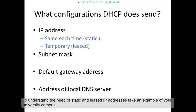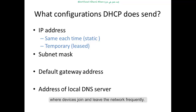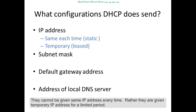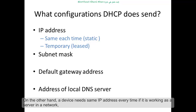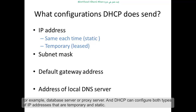IP addresses can be the same each time — that is static — or temporary, that is a lease. To understand the need for static and lease IP addresses, take an example of a university campus where devices join and leave the network frequently. They cannot be given the same IP address every time; rather they are given a temporary IP address for a limited period. On the other hand, a device needs the same IP address every time if it is working as a server in a network — for example, a database server or proxy server. DHCP can configure both types of IP addresses: temporary and static.